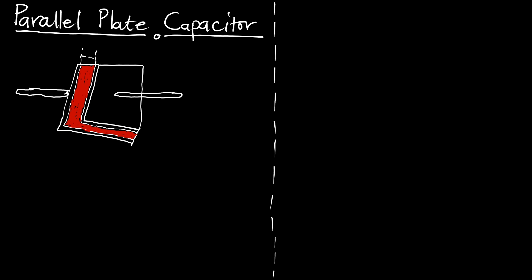Every capacitor has parallel plates. As you can see in the figure, we have two parallel plates — plate 1 and, opposite to it, plate 2. These plates are divided by a red part, which is what we call a dielectric or dielectric material. To construct a parallel plate capacitor, you must get the parallel plates separated by a dielectric material, which is an insulator between plate 1 and plate 2.